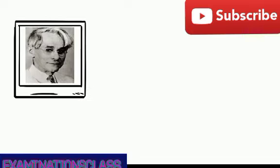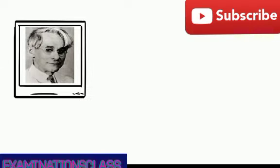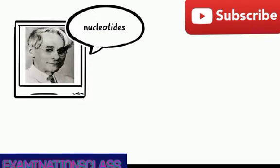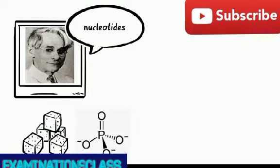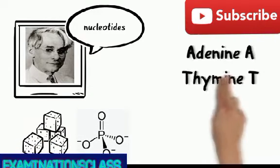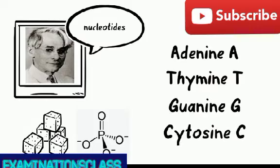Phoebus Levine and others discovered that DNA was composed of subunits called nucleotides. A nucleotide is made up of a sugar, a phosphate group, and one of four nitrogenous bases. These are adenine, thymine, guanine, and cytosine.